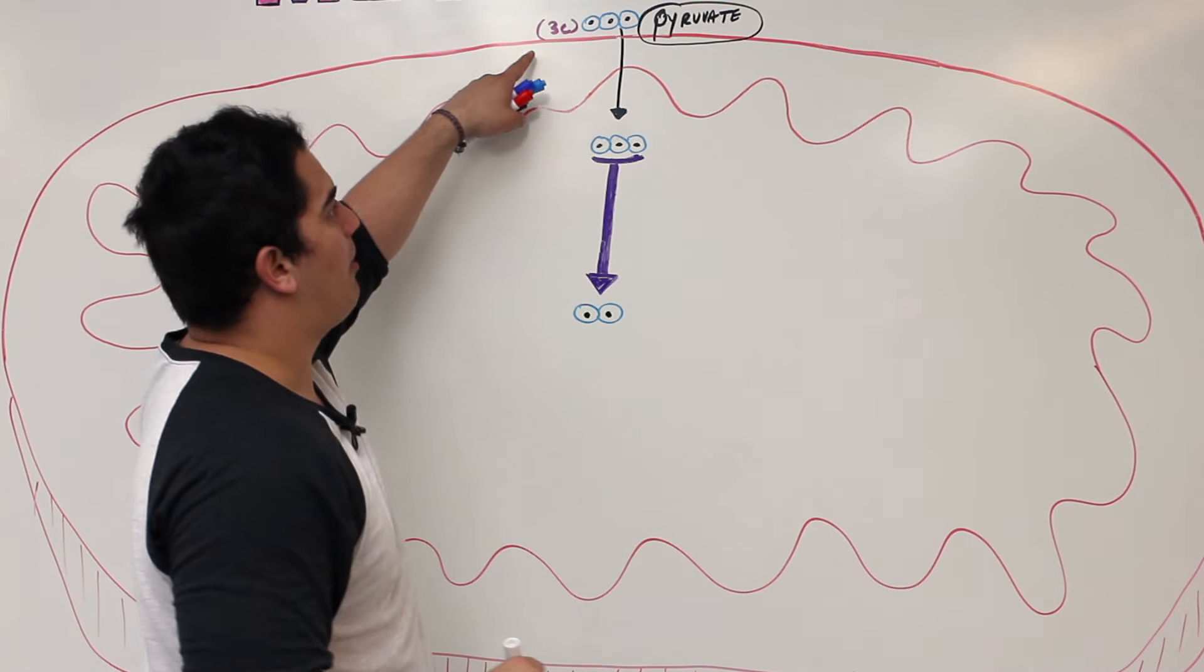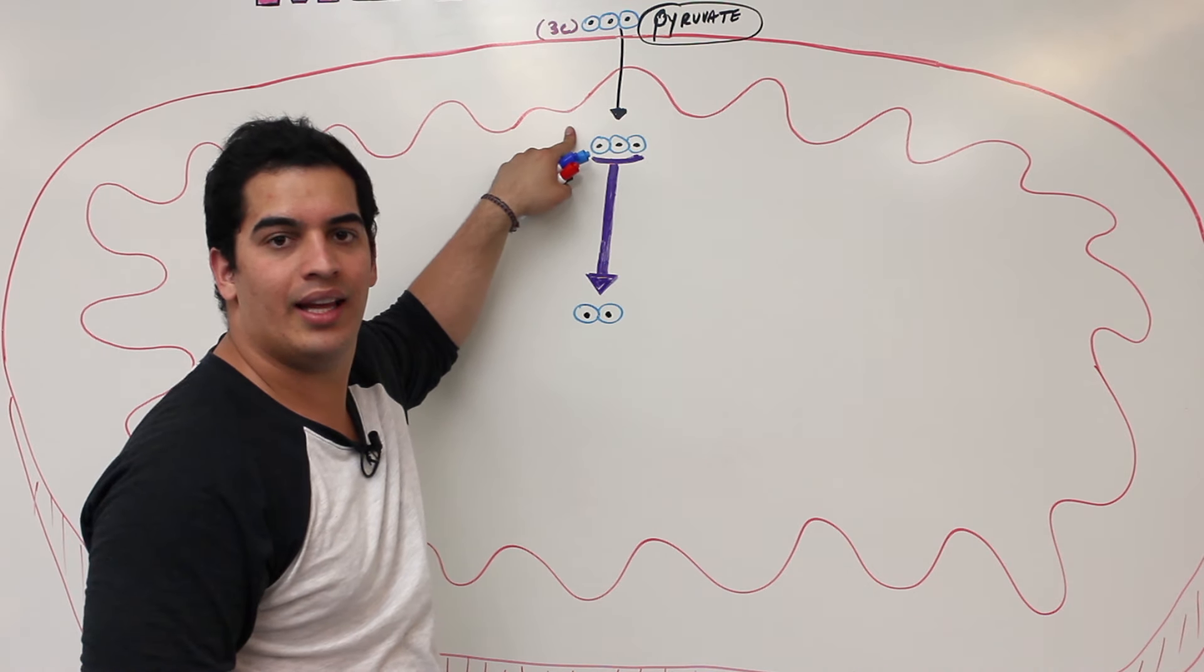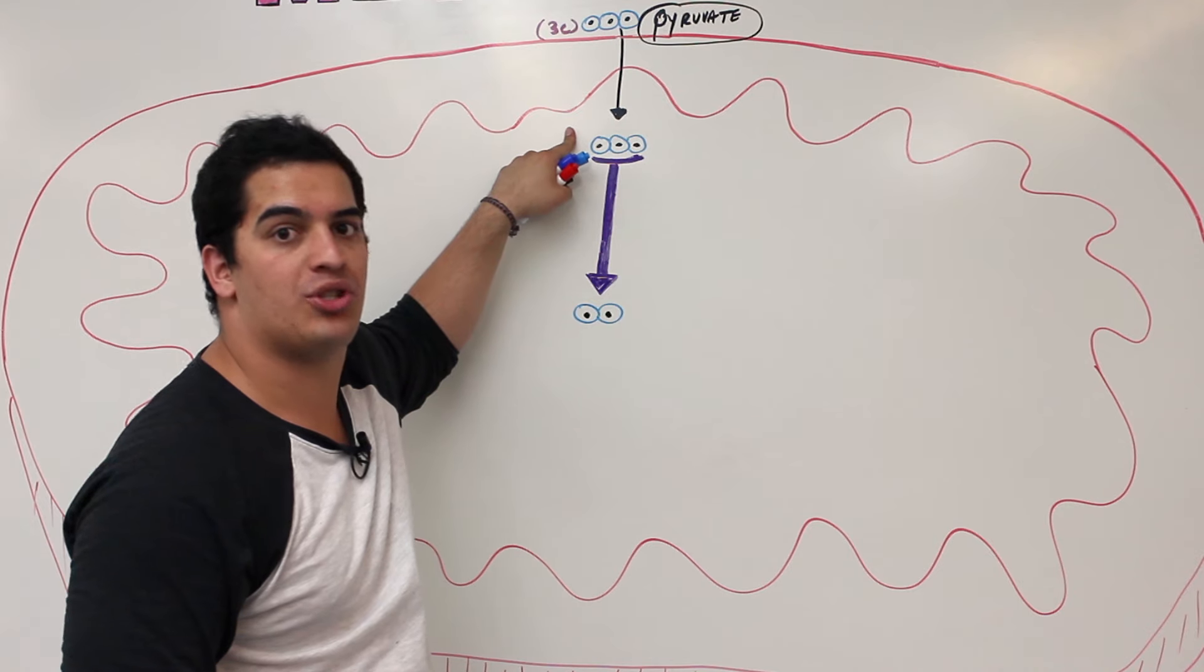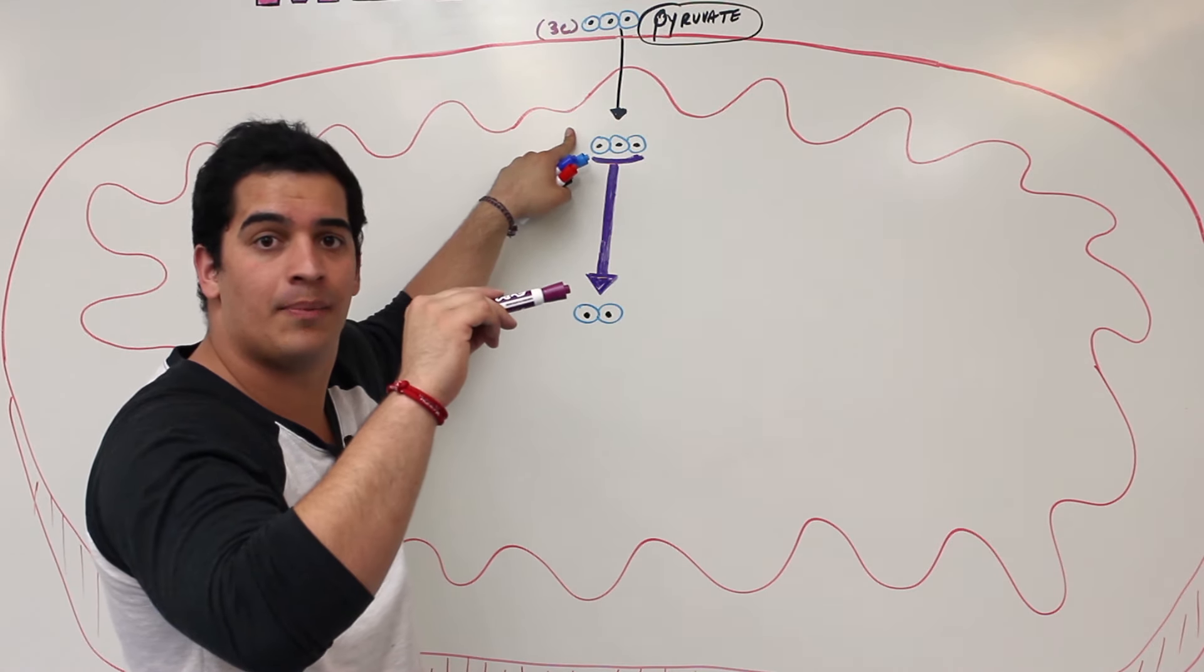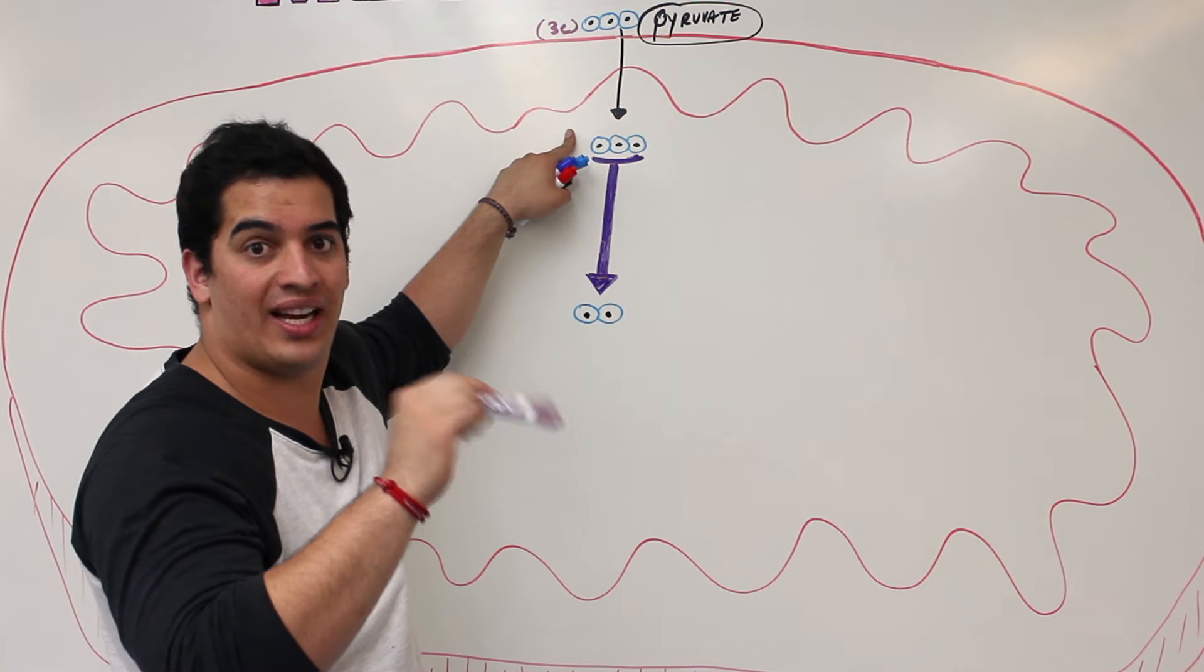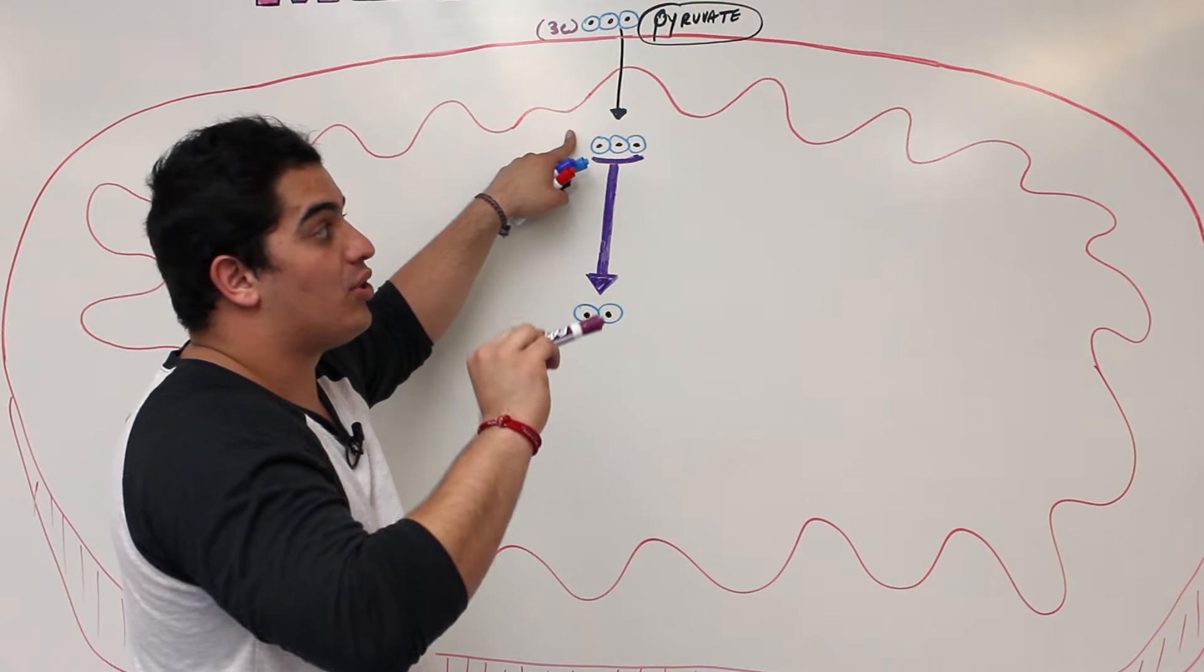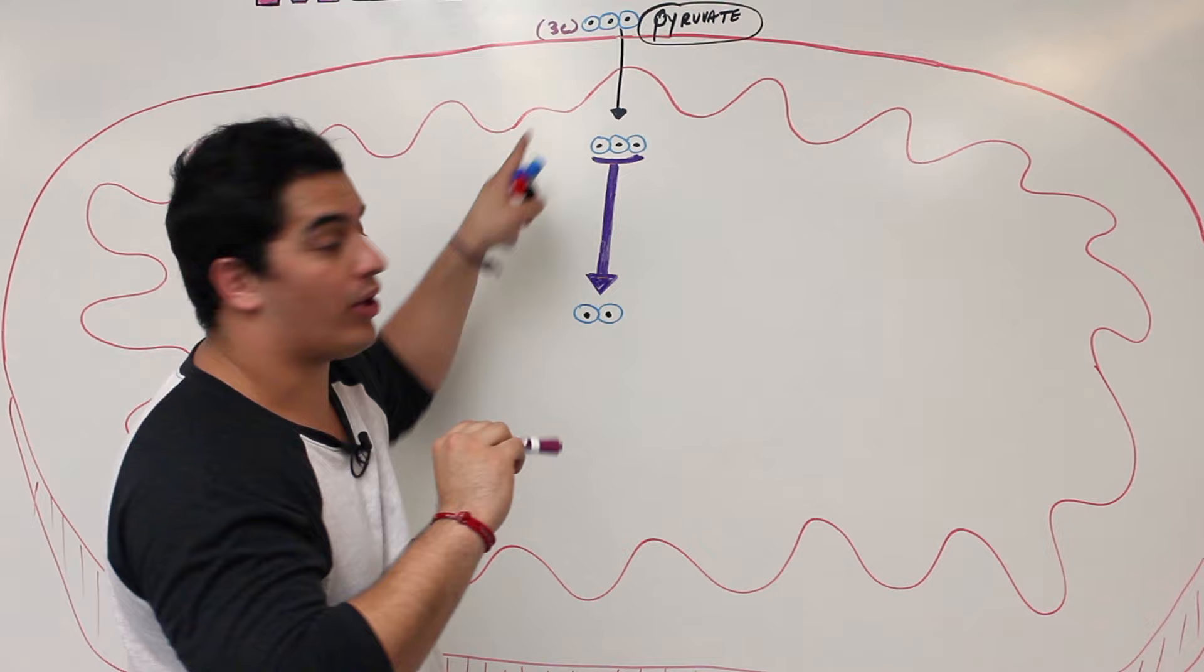If you remember, I told you that the only way that pyruvate can get taken into the mitochondria is if there is oxygen. Because remember, NADH that was generated within glycolysis has to go and drop those hydride ions onto the electron transport chain. If not, and there's no oxygen...